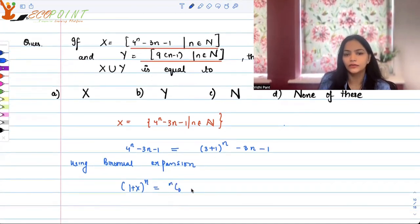So we know that (1+x)^n is nC0 x^0 + nC1 x^1 + nC2 x^2 + so on and so forth till nCn x^n.